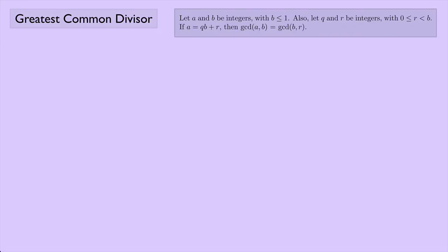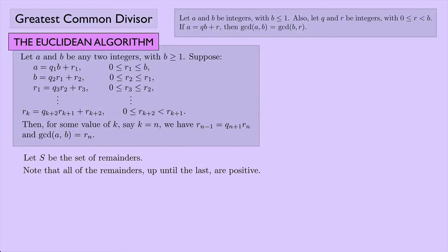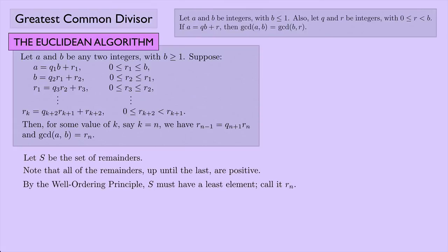Now I think we are ready to prove the Euclidean algorithm. To start this proof, I'm going to let S be the set of all the remainders — R1, R2, and so on. Note that all the remainders up until the last one are positive. The last remainder would always be zero, but everything before that would always be positive. The well-ordering principle says that S has to have a least element — call that least element R sub N.